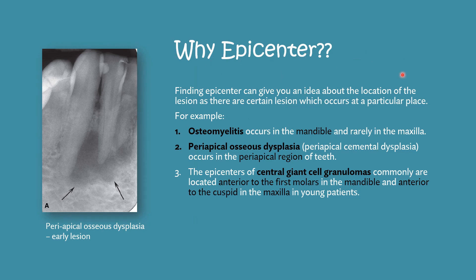Why find the epicenter? Finding the epicenter gives you an idea about the location of the lesion, since certain lesions occur at particular places. For example, osteomyelitis occurs in the mandible and rarely in the maxilla. Periapical osseous dysplasia usually occurs in the periapical region of the teeth. The epicenter of central giant cell granuloma is commonly located anterior to the first molars in the mandible and anterior to the cuspids in the maxilla in young patients.